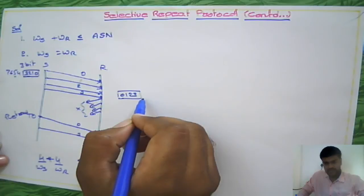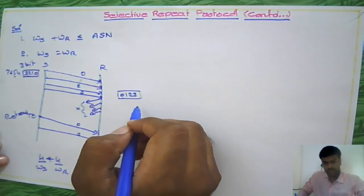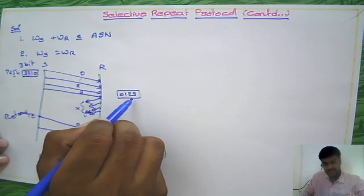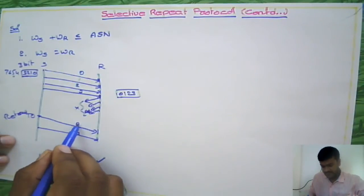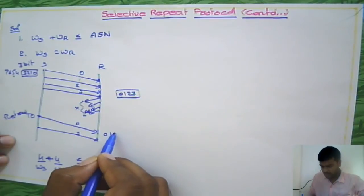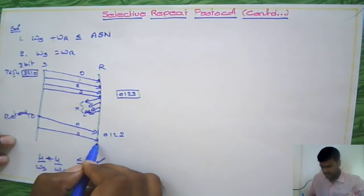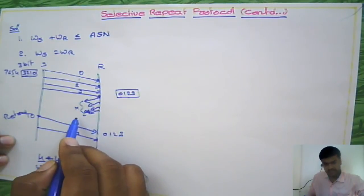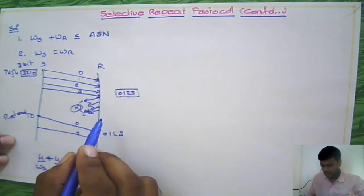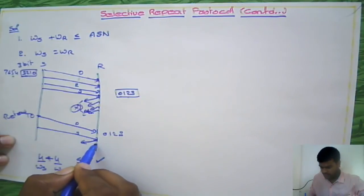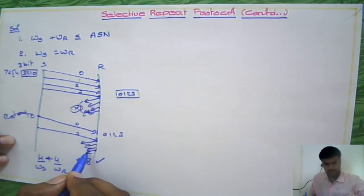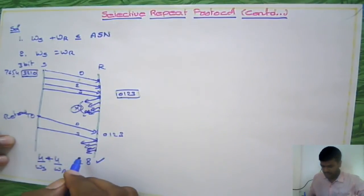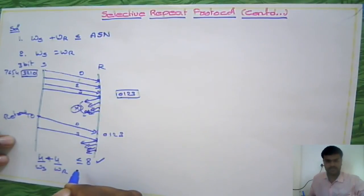The receiver has already received 0, 1, 2, 3 and is expecting the next sequence number, which is 4. When it receives the retransmitted packets 0, 1, 2, 3 — which are outside its expected window — it will assume these were already received and that the acknowledgements were lost in transit. So it sends acknowledgements again, and this time the sender receives them properly, solving the lost acknowledgement problem.